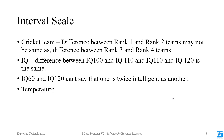For example, one person has an IQ of 60 and another has 120. We cannot say the second person is twice as intelligent, because there is no absolute zero point for intelligence.